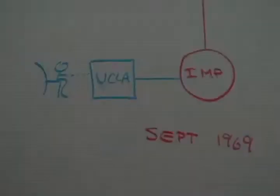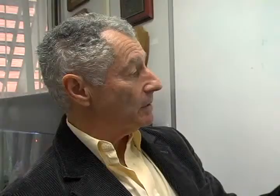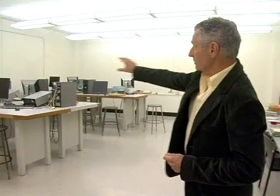But one node does not make a network. One month later, a second switch was delivered to Stanford Research Institute. Then on October 29th, 1969, right here at UCLA on the third floor of Boelter Hall, Kleinrock's group attempted to log in to the node at Stanford Research Institute.